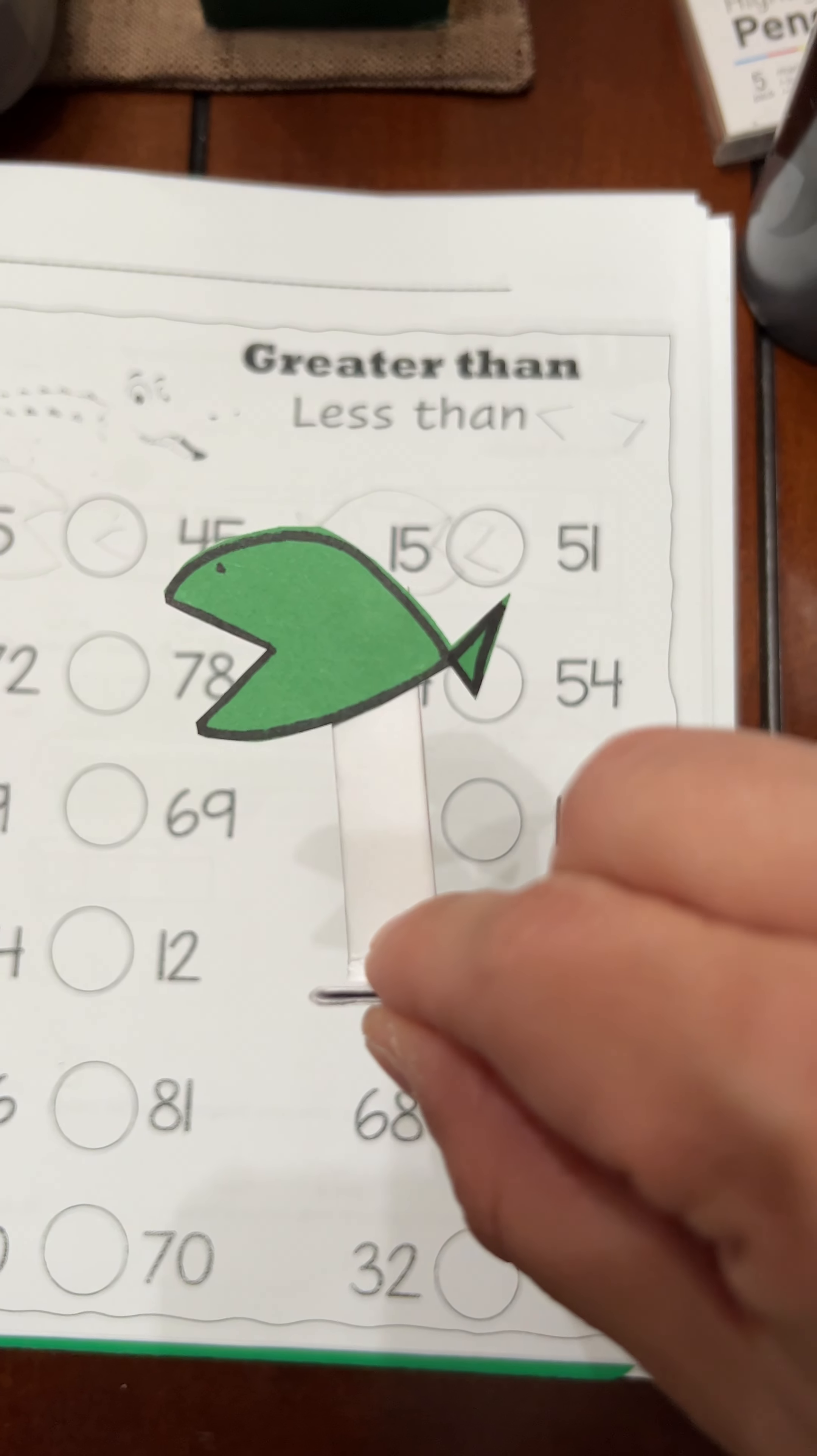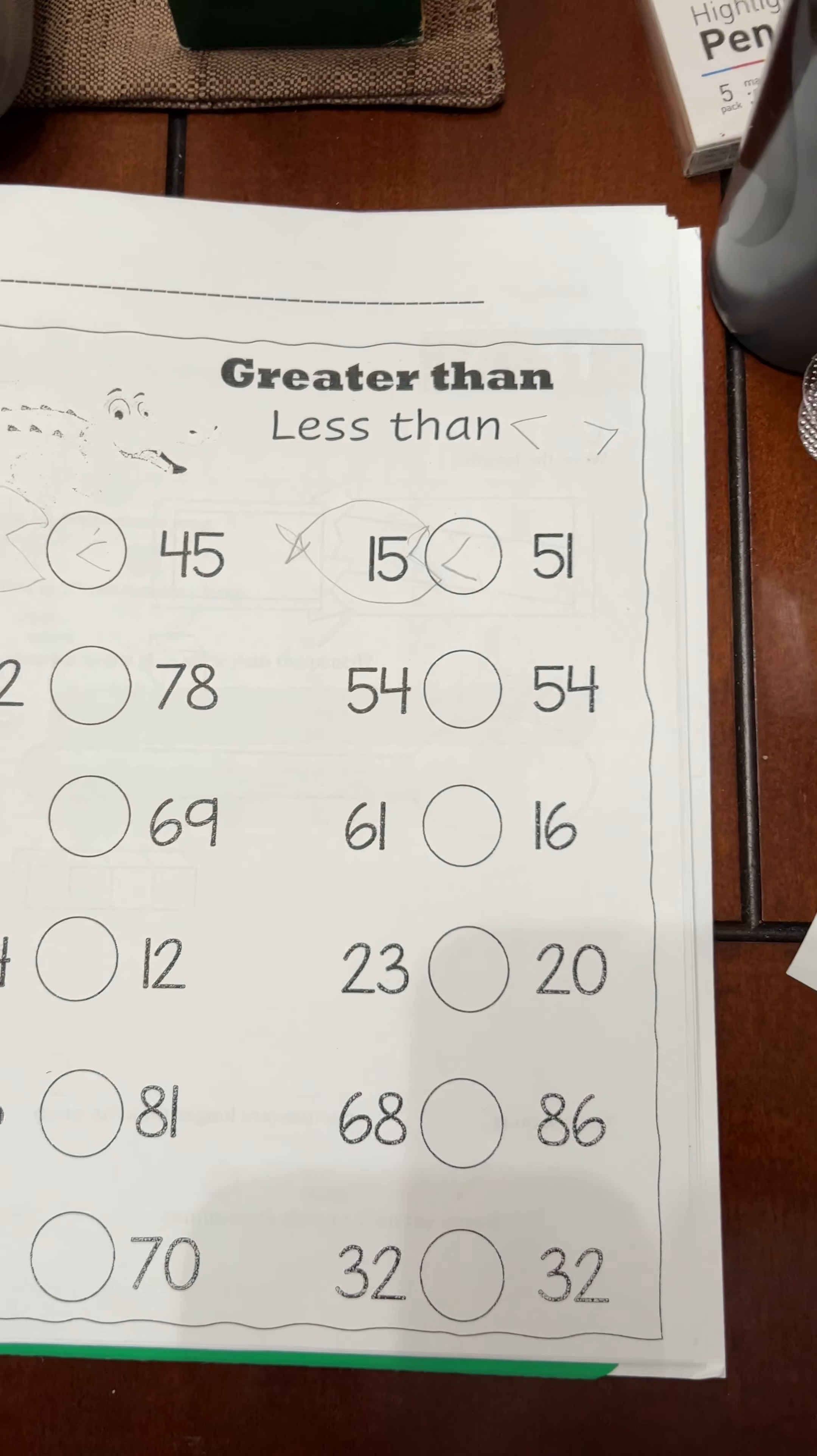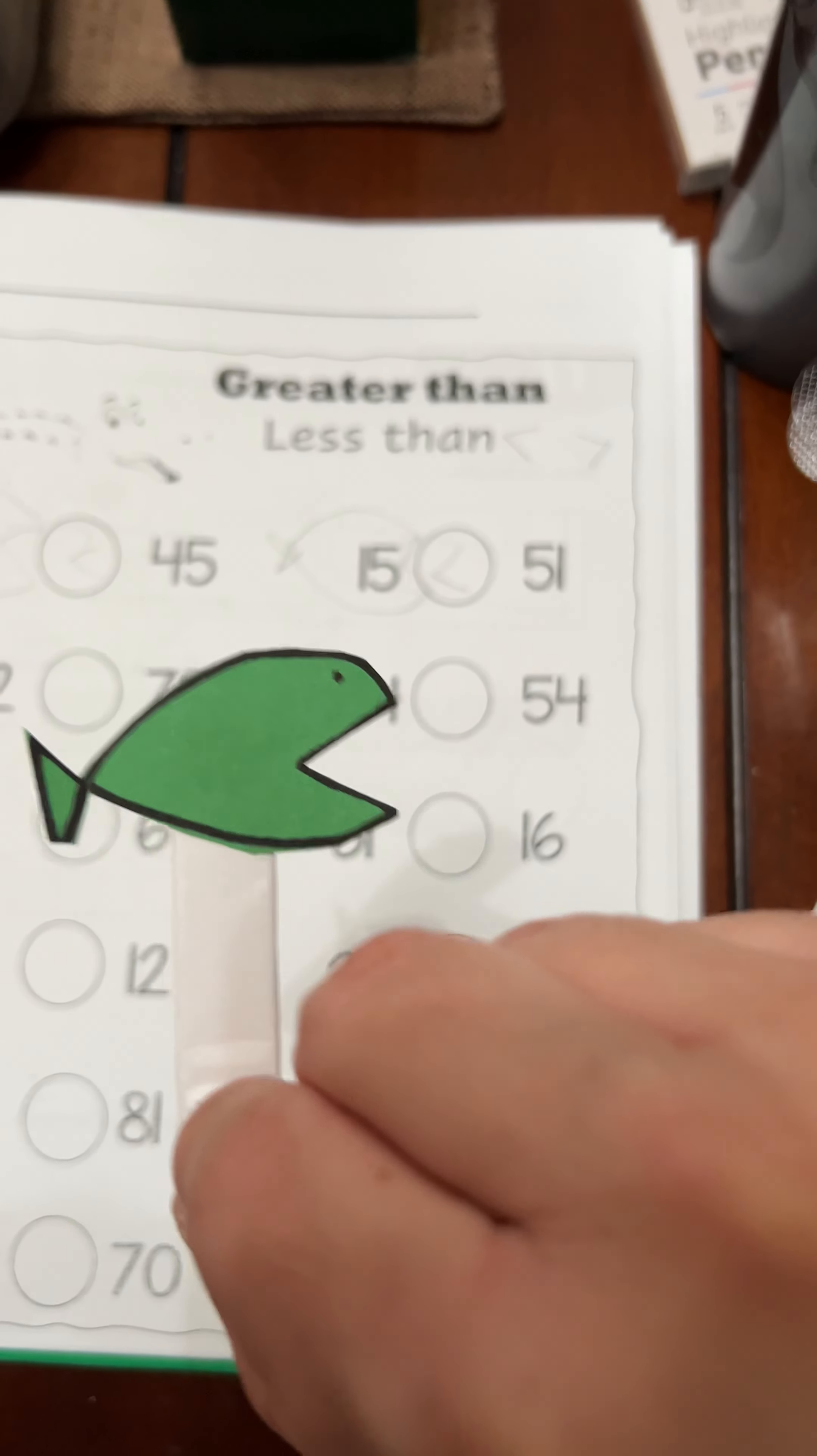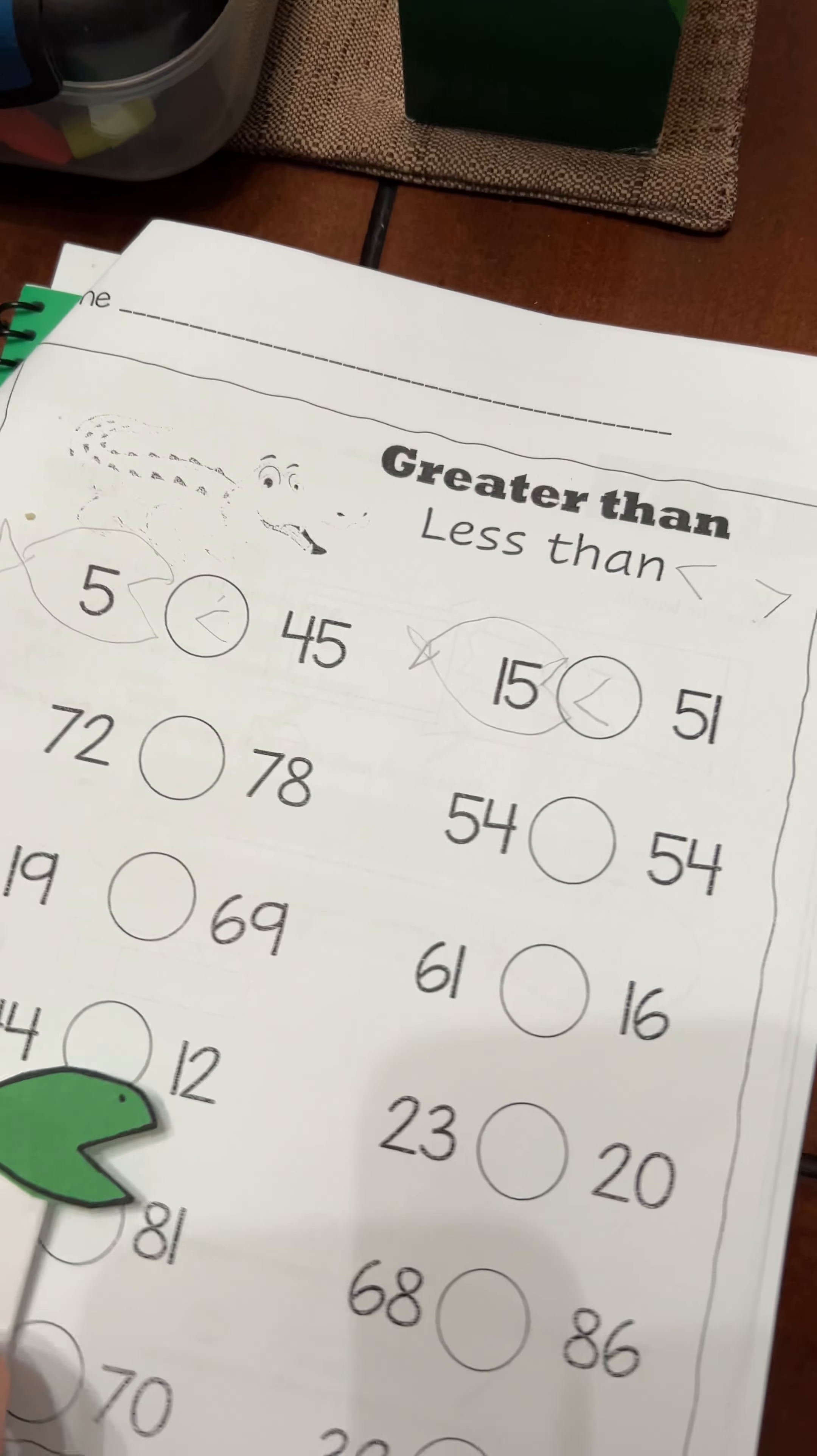I just glued them to a postcard. They're pointing different directions, and so now what he should be able to do is figure out which fish he's going to use to eat the smaller number.